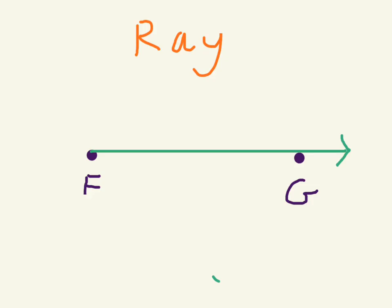And to write this ray, you would write F and G beside each other with a line and a little arrow on top. And because the ray starts at F, F has to be the first letter here. So this is ray FG.